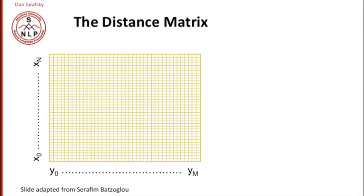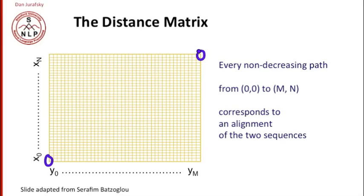We can look at this distance matrix and think about the paths from the origin to the end of the matrix. Any non-decreasing path that goes from the origin to the point n, M corresponds to some alignment of the two sequences.